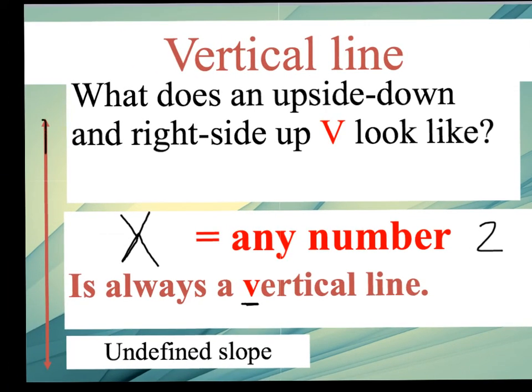And when you have a vertical line, here's one graphed on the side for us, whenever you have a vertical line graphed, your slope is always going to be undefined.